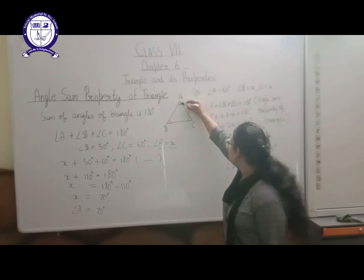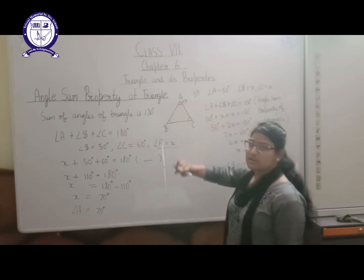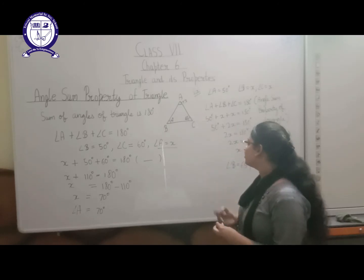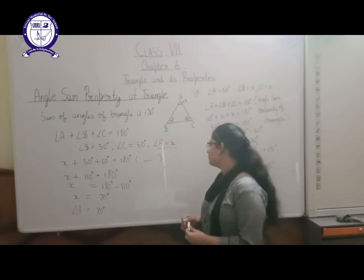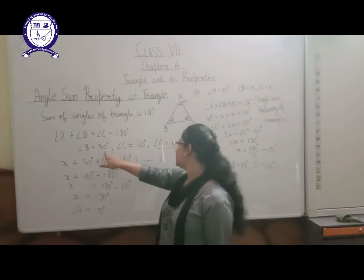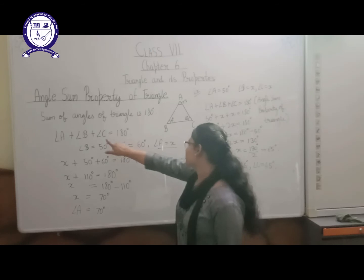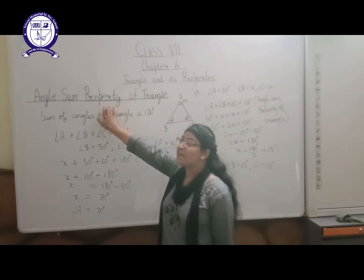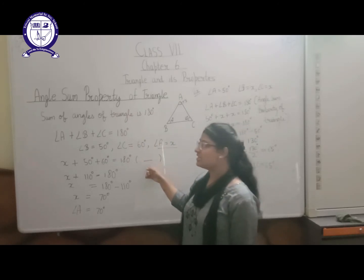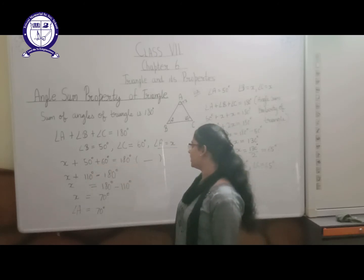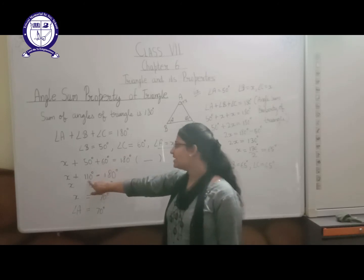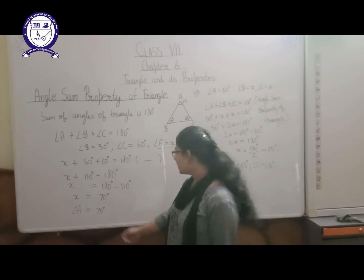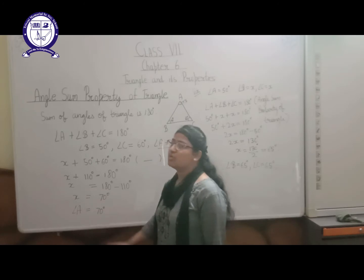Suppose angle A is X, angle B is 50 degrees, and angle C is 60 degrees — find the value of X. By the angle sum property: X plus 50 plus 60 equals 180 degrees. The sum of 50 and 60 is 110 degrees, so X plus 110 equals 180. Taking 110 to the other side, X comes out to be 70 degrees. So angle A is 70 degrees.